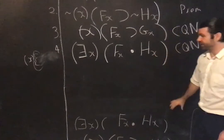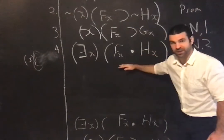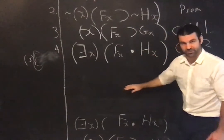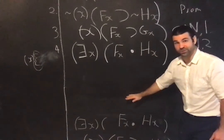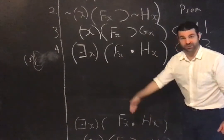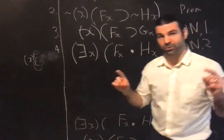So you transform everything into quantified form, then you do instantiations, truth functional reasoning, truth functional reasoning, truth functional reasoning, get the instance you need, and then the generalization, and then you're done. These will be the pure quantified problems.